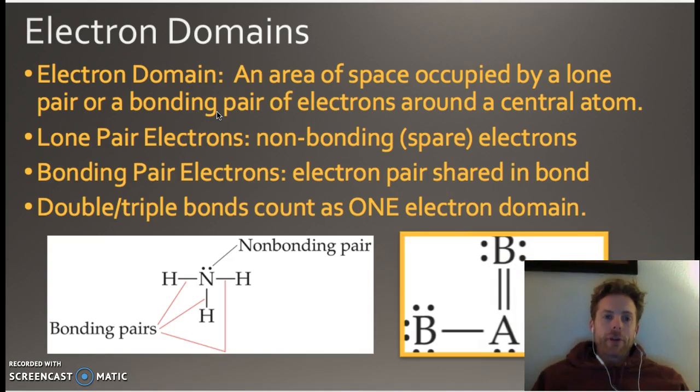Alright, so let's look at these types of electron pairs. First off, we already talked about electron domains, but just to kind of reemphasize it, it's an area of space occupied by a lone pair or a bonding pair. So this one right here has four lobes, or electron domains. Electron domains are the lobes, so lobe one, lobe two, lobe three, and this is also a lobe, lobe four. These are the four electron domains.